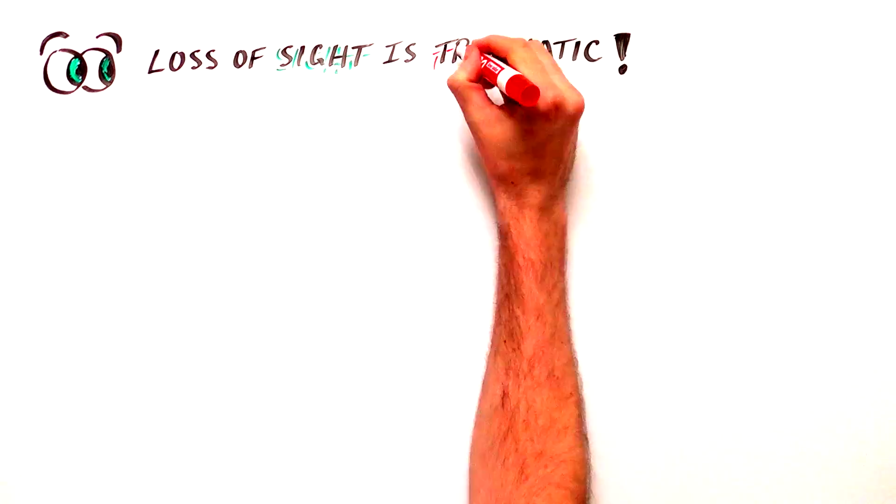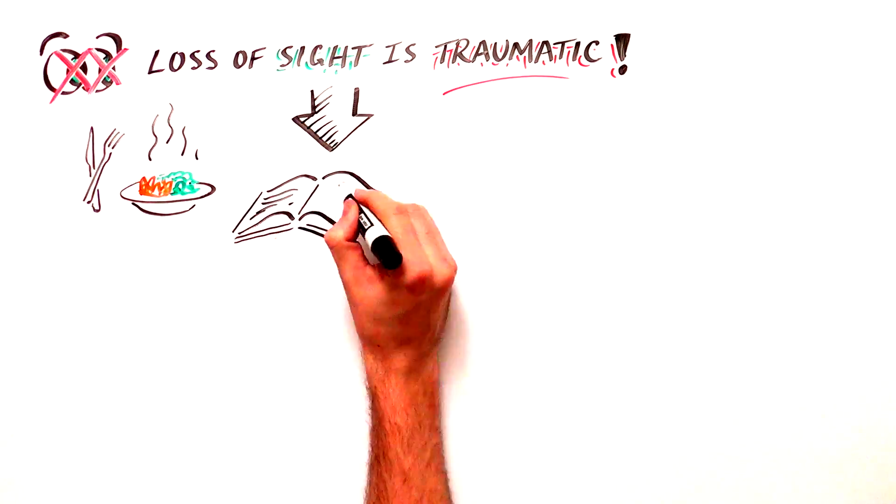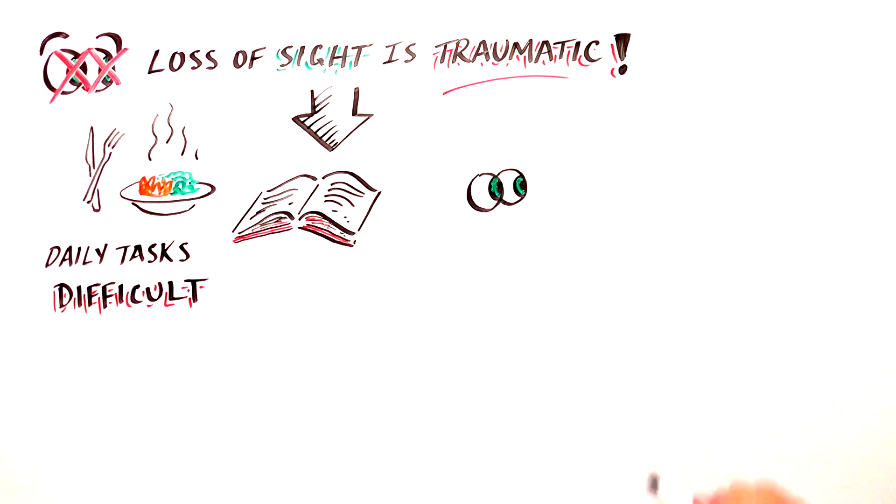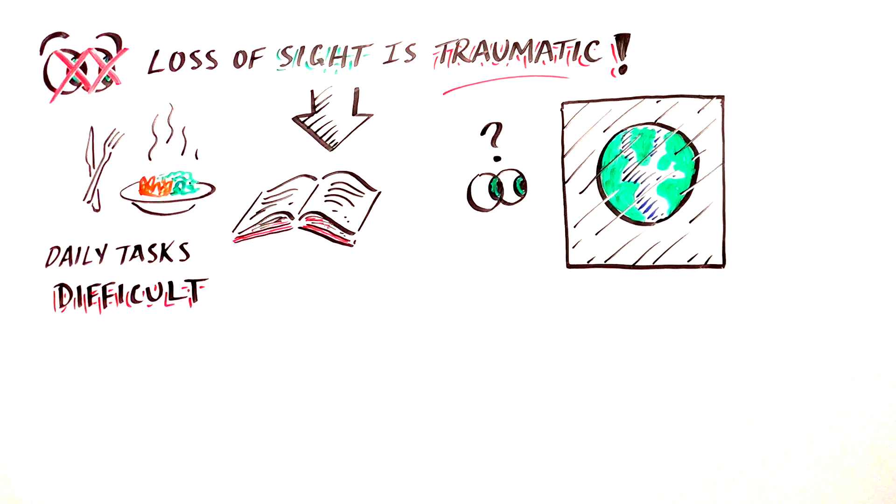Loss of sight is a traumatic event that dramatically affects one's quality of life, making it nearly impossible for afflicted individuals to perform daily tasks independently or engage with the world around them.